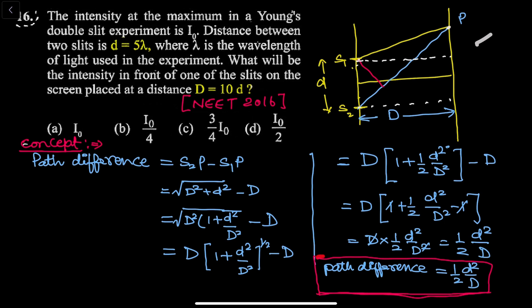From here, if I take capital D² as common, it becomes D × [√(1 + d²/D²) − 1]. Using the binomial theorem approximation, √(1 + d²/D²) ≈ 1 + (1/2)(d²/D²), so the expression simplifies. After cancellation, the path difference Δx = d²/(2D), which is our key formula.